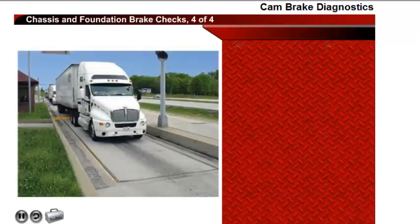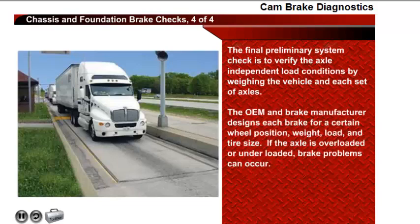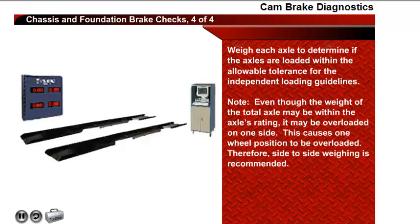The mechanical functionality of the external brake system components has been verified. The final preliminary system check is to verify the axle independent load conditions by weighing the vehicle and each set of axles. Remember, the OEM and brake manufacturer designs each brake for a certain wheel position, weight, load, and tire size. If the axle is overloaded or underloaded, brake problems can occur. Weigh each axle to determine if the axles are loaded within the allowable tolerance for the independent loading guidelines. Even though the weight of the total axle may be within the axle's rating, it may be overloaded on one side, causing one wheel position to be overloaded. Therefore, side-to-side weighing is recommended.